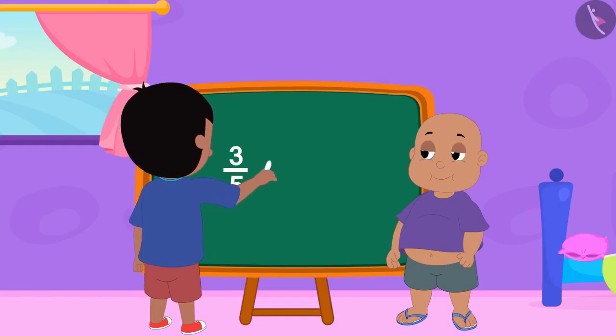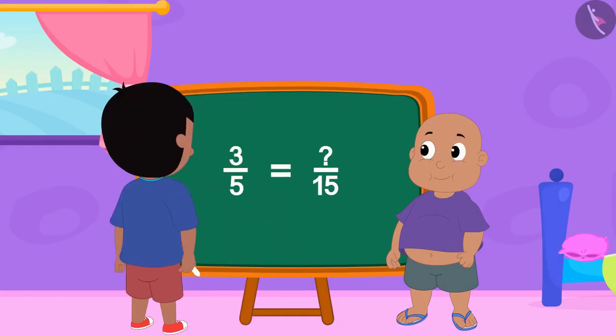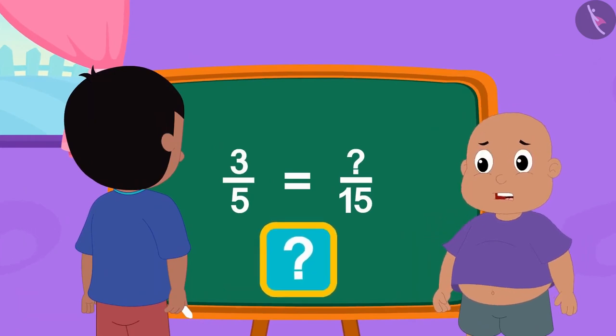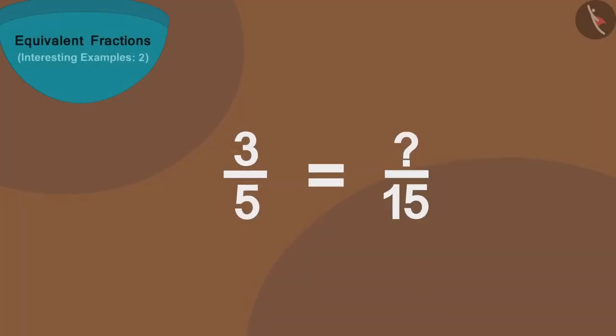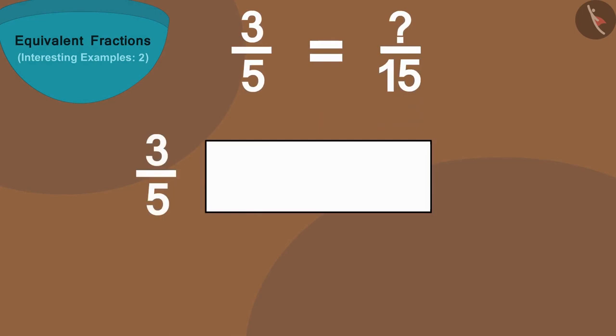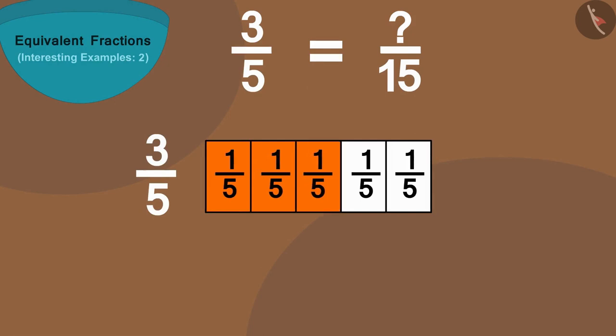This is Raju's next fraction. Children, can you find this fraction? Let's find it using a different shape. We can show this fraction by dividing such a strip into 5 equal parts and coloring 3 parts in it. Now, how many parts are there in its equivalent fraction?